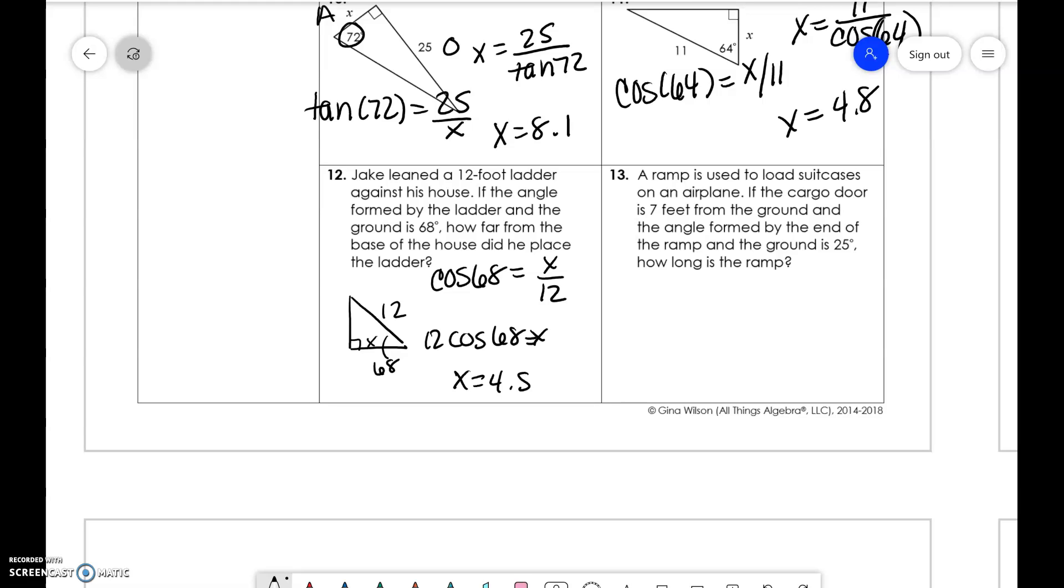A ramp used to load suitcases on an airplane. The cargo door is 7 feet from the ground and the angle formed by the end of the ramp and the ground is 25 degrees. How long is the ramp? We have opposite and hypotenuse. So we're going to do sine of 25 is equal to 7 over x. So x is equal to 7 over sine of 25. x is equal to 16.6 feet. And I should have done this one too. This is feet as well. All right. Hope that helps.